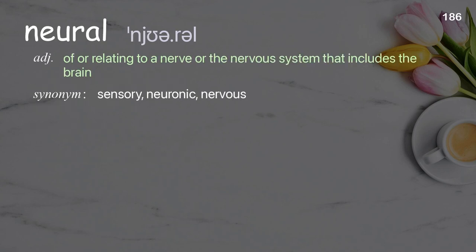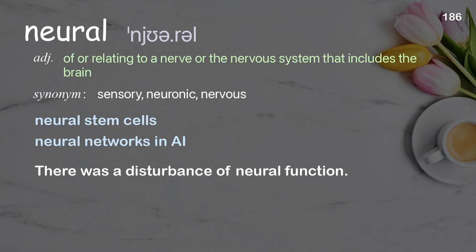Neural: Of or relating to a nerve or the nervous system that includes the brain. Examples: Neural stem cells, Neural networks in AI. There was a disturbance of neural function.